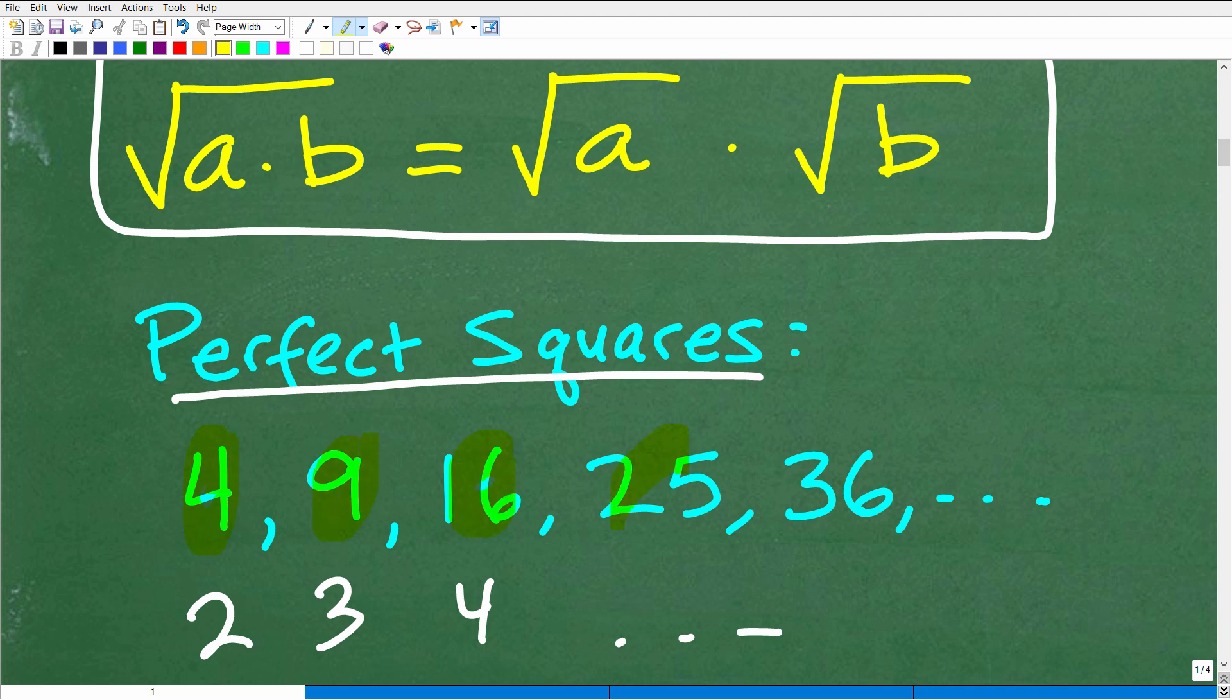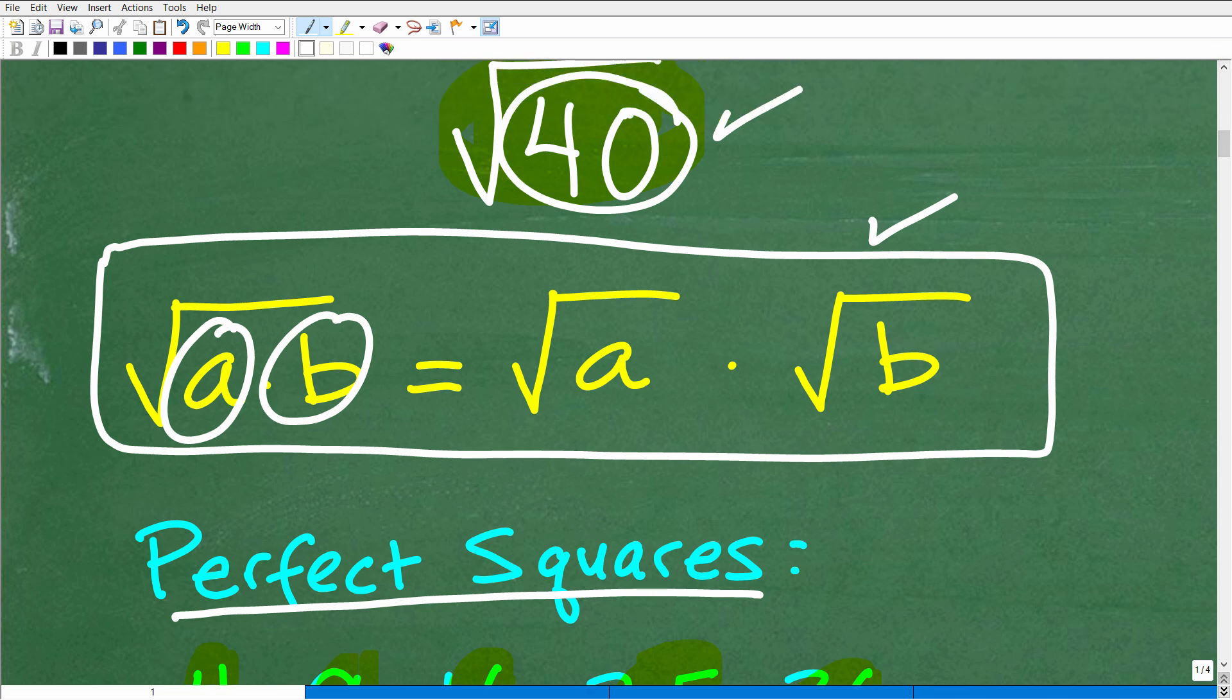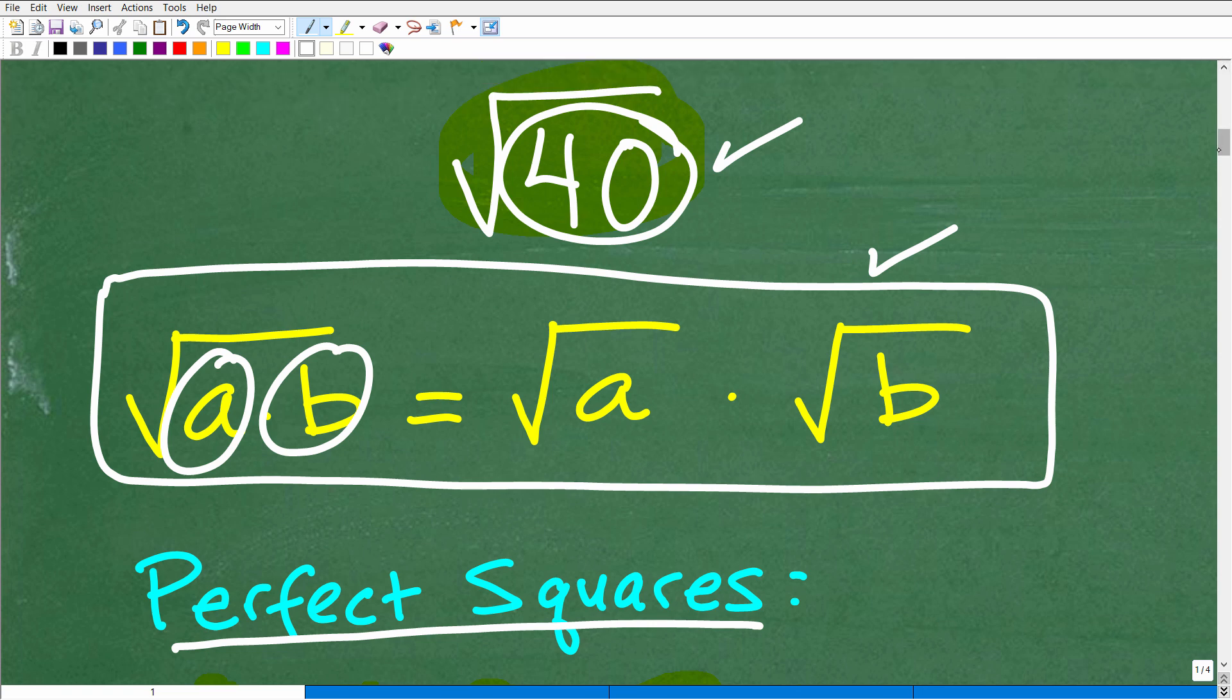So the objective is we want to look for perfect squares. These numbers here, 4, 9, 16, 25, 36, and of course there's an infinite amount. We want to see if there's any of these type of numbers as factors in a particular square root. Because if there are perfect square factors, then we can simplify a square root.